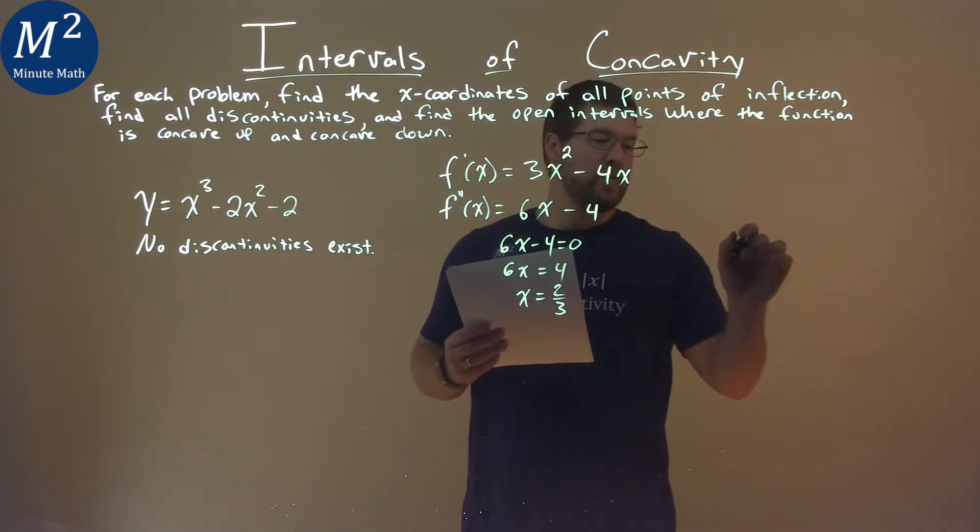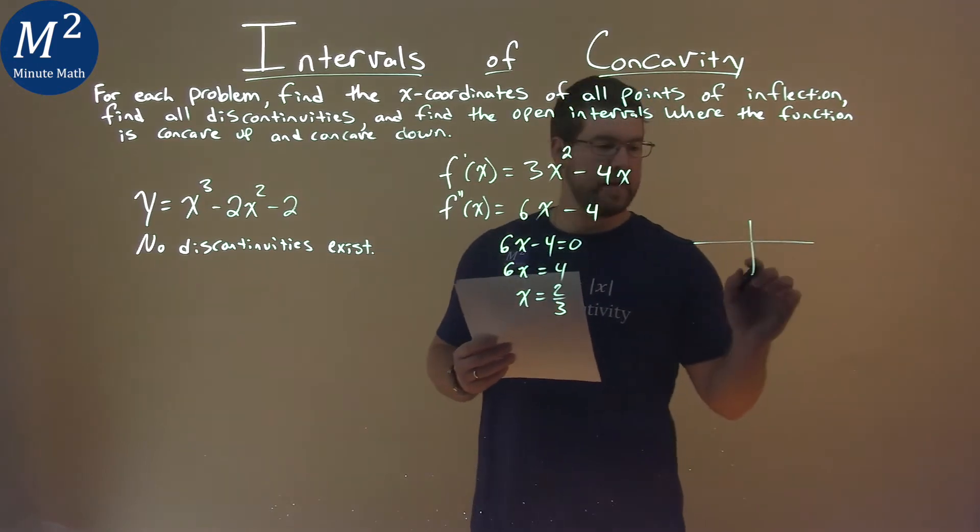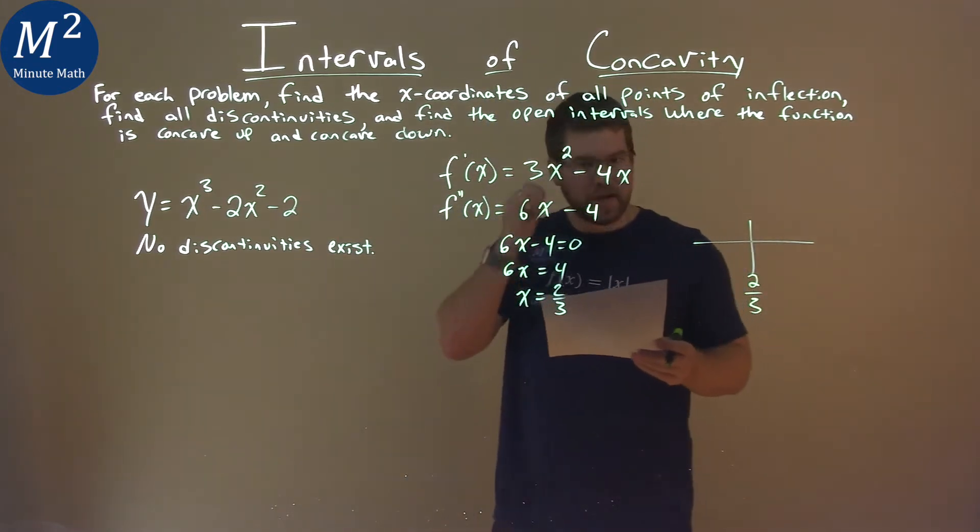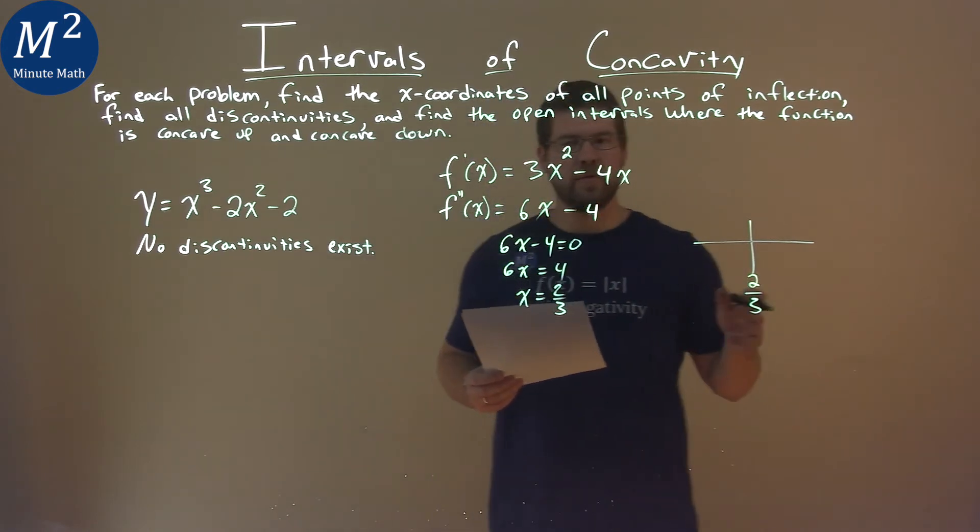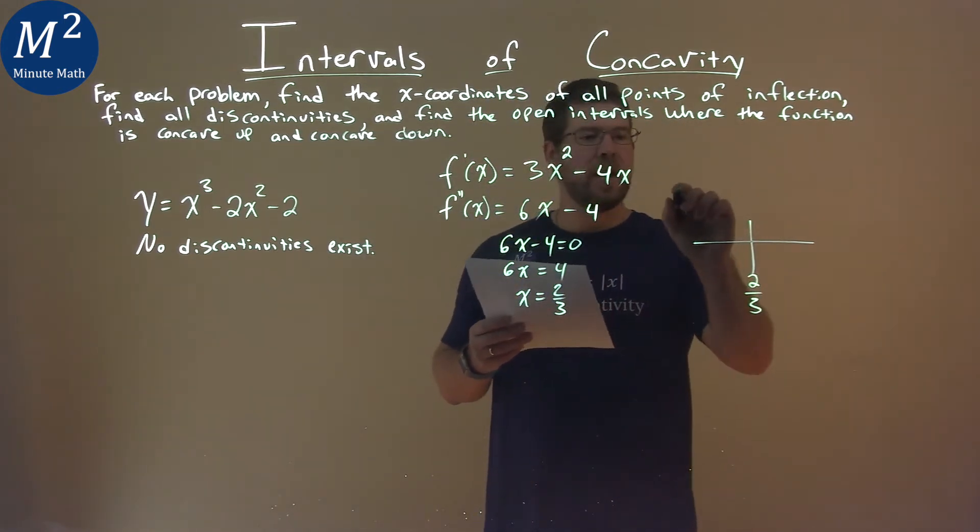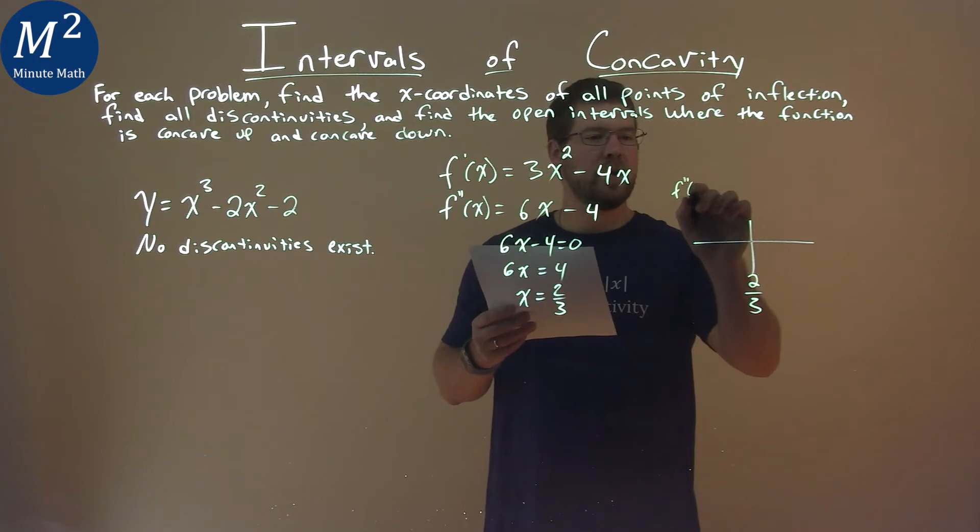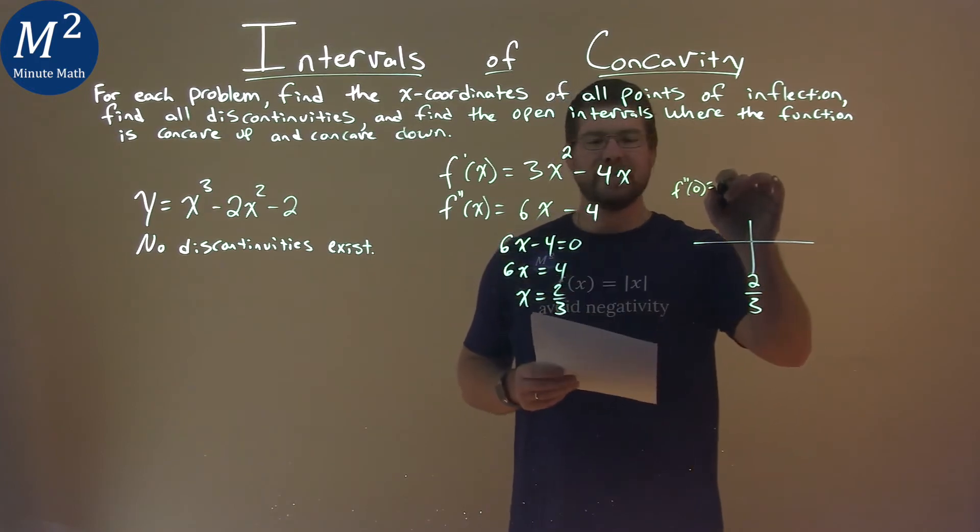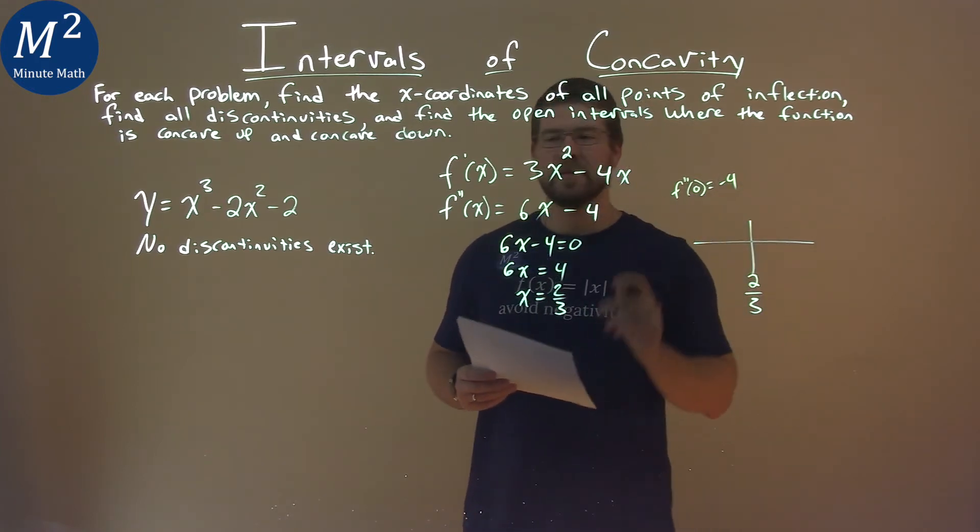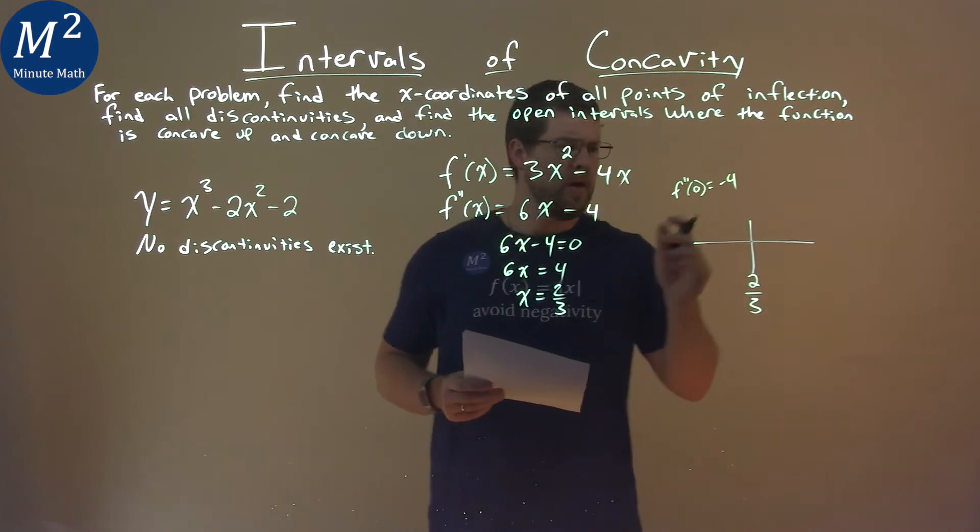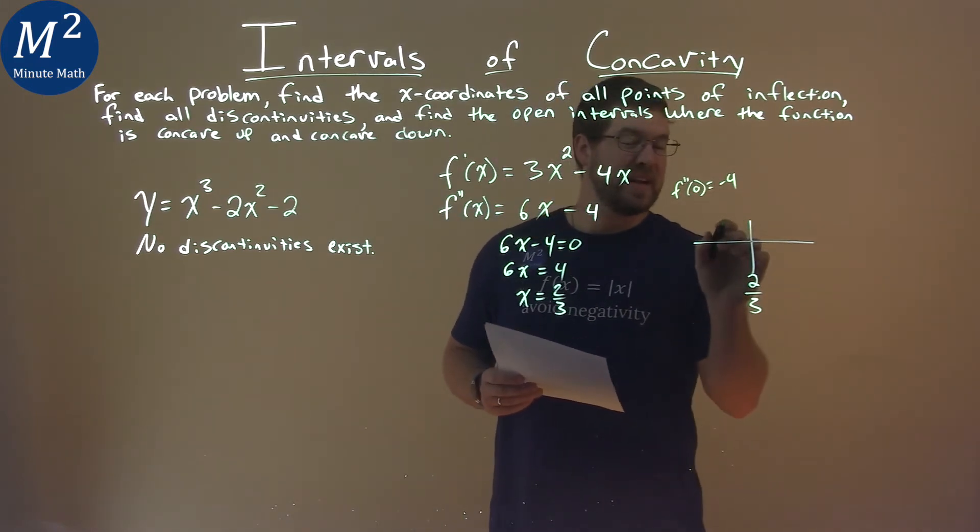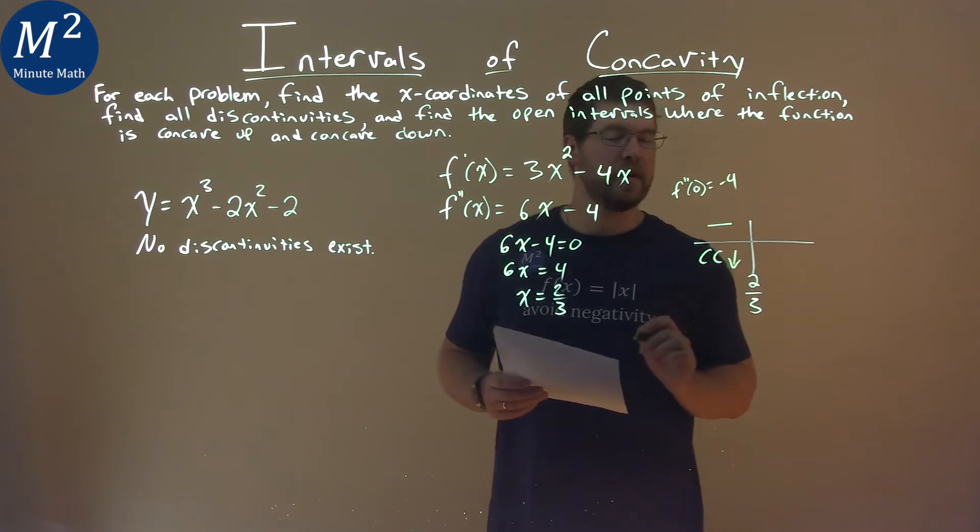Now I need to do my second derivative test. I take 2/3 and need to plug in a value less than 2/3 and greater than 2/3 into my second derivative. I picked 0 for my second derivative and got an output of negative 4. I only care that it's negative, which means we're concave down here.